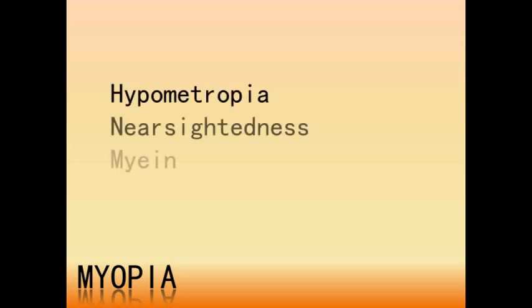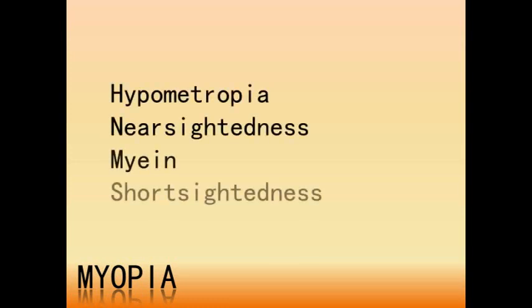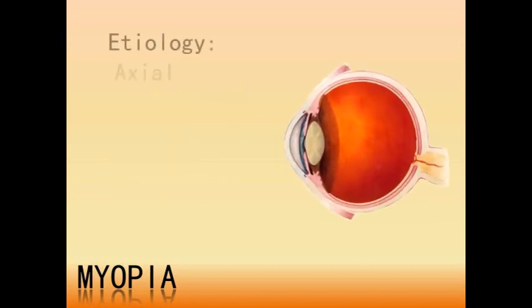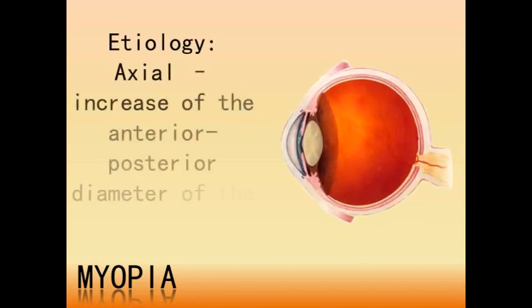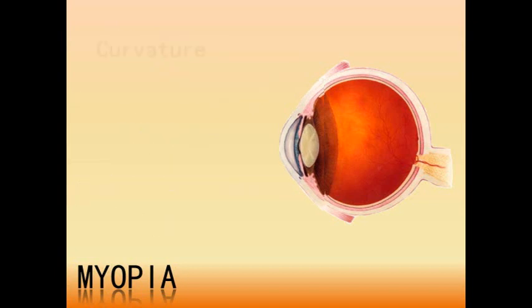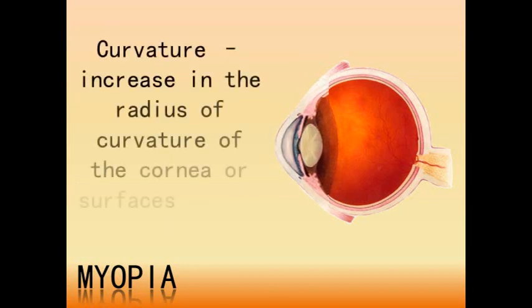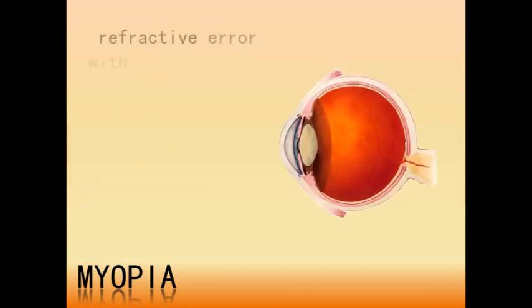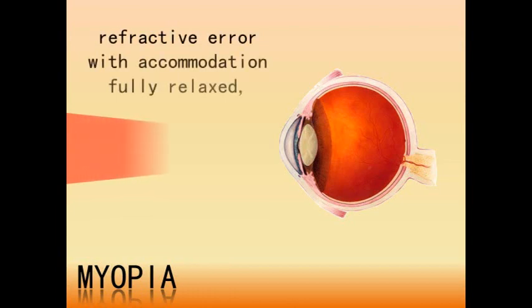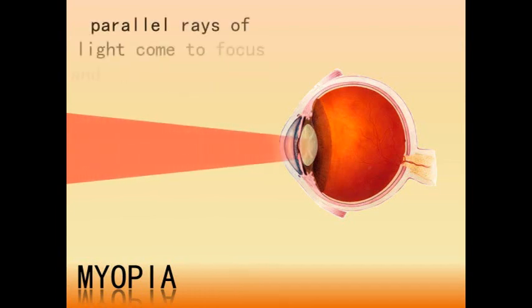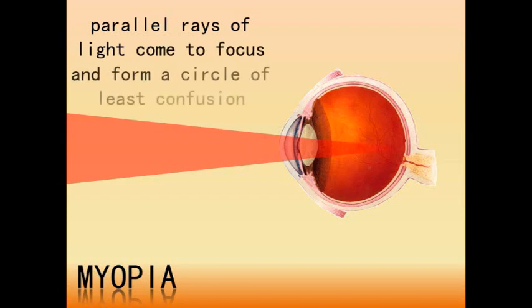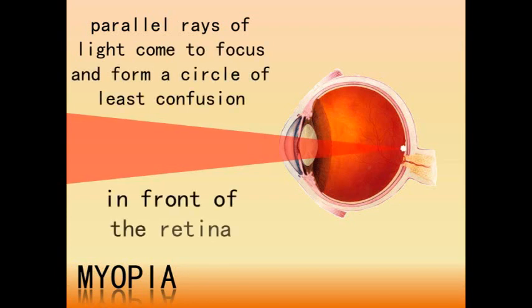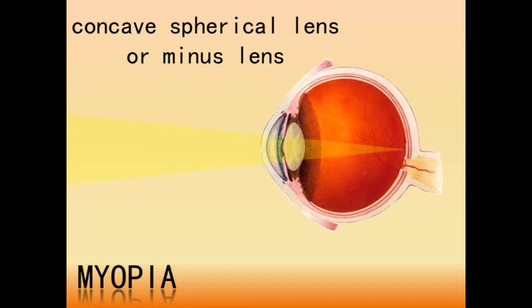Myopia — also called hypometropia, nearsightedness, or short-sightedness — is due to an increase in the anterior-posterior diameter of the eye, which may be associated with an increase in the radius of curvature of the cornea or one or both surfaces of the lens. It is a refractive error in which, with accommodation fully relaxed, parallel rays of light focus in front of the retina. Myopia can be corrected by a concave spherical lens, or minus spherical lens.